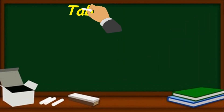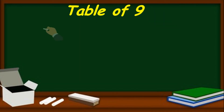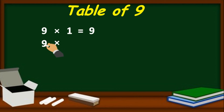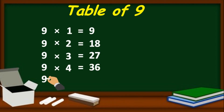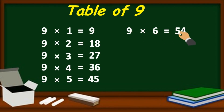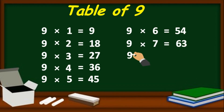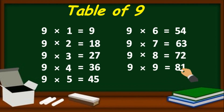Table of 9. 9 one's are 9, 9 two's are 18, 9 three's are 27, 9 four's are 36, 9 five's are 45, 9 six's are 54, 9 seven's are 63, 9 eight's are 72, 9 nine's are 81, 9 ten's are 90.